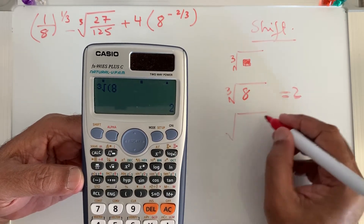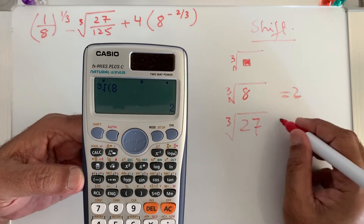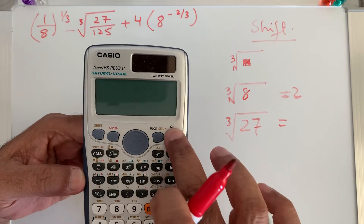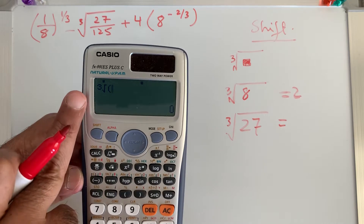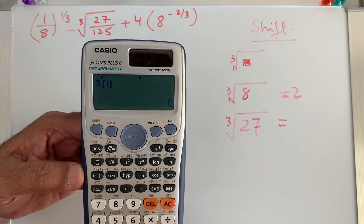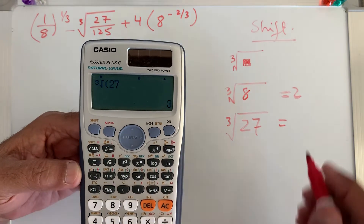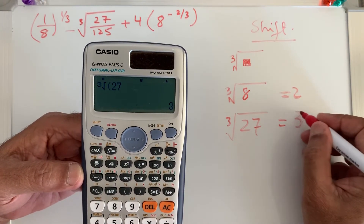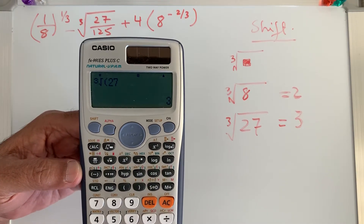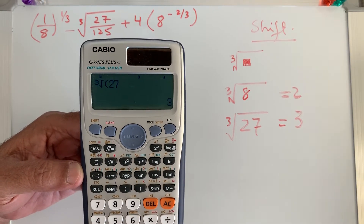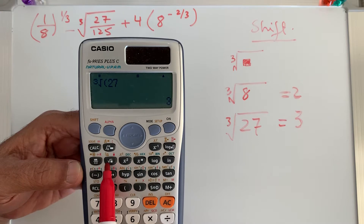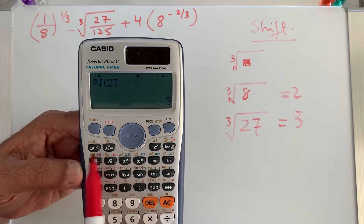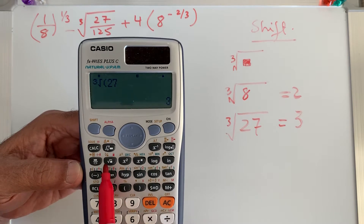Let's take another example — the cube root of 27. Clear the calculator, press shift, then the cube root sign, enter 27, and the answer is 3. So you now know how to take cube root on the calculator. Shift means second function — all the red-labeled functions on top of the black buttons are second functions.